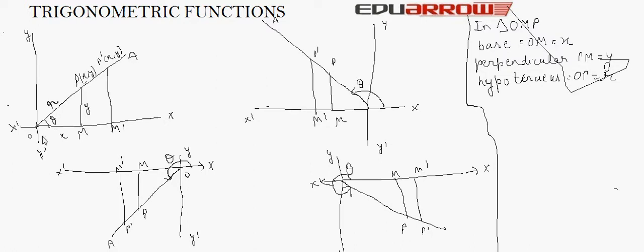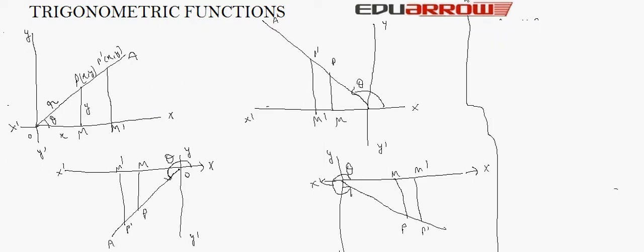We have drawn a perpendicular from P to the x-axis, and that point is known as M. The horizontal distance from the origin to M is known as x, and the vertical distance is y. Now, this slanted line OA is known as hypotenuse, the vertical segment PM is known as perpendicular, and the horizontal segment OM is known as base.